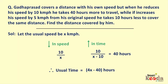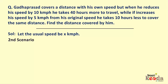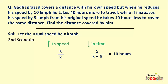Let's mark this as equation number 1. Now in the second scenario, Gadha Prasad increases his speed by 5 km per hour, so the increase in speed is 5/x. Applying the concept of constancy once again, the reduction in time would be 5/(x+5), which should be equal to 10 hours. So on cross multiplying, the usual time will be 2x+10 hours. Let's mark it as equation number 2.